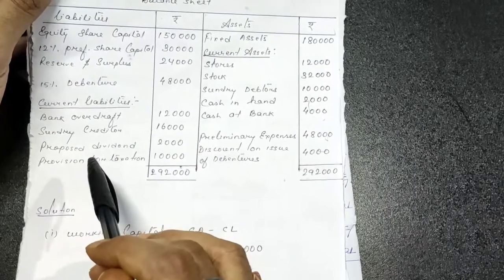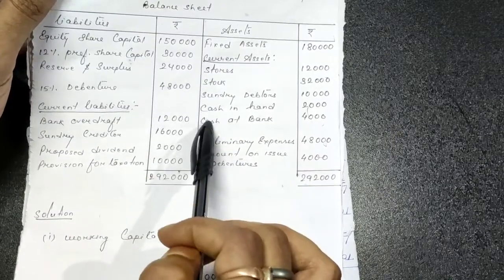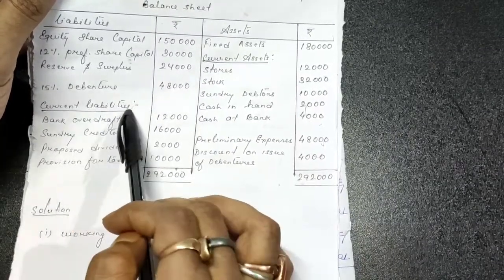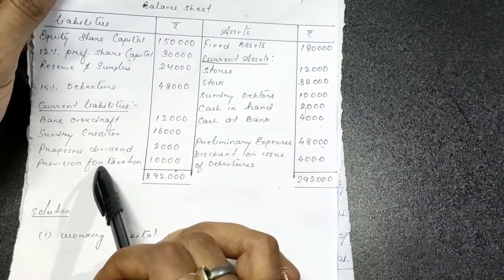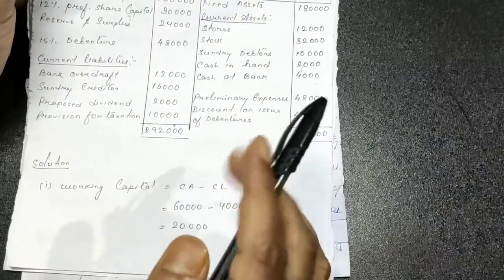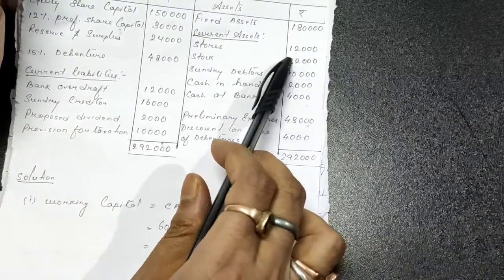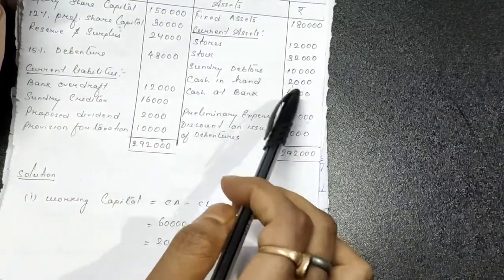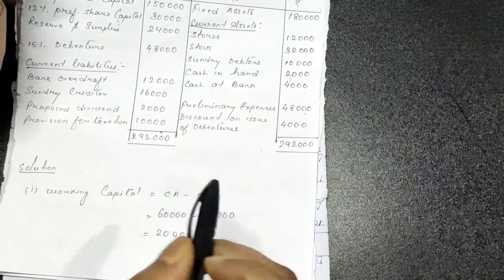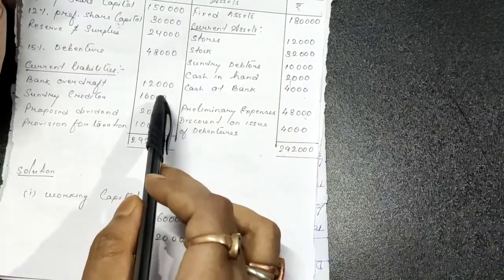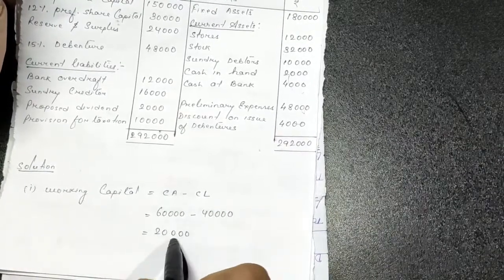The heading is already given — current assets — so those five items are your current assets, and under current liabilities those four items are your current liabilities. If we add up the five current asset amounts, the total coming up is 60,000. Minus current liabilities: if we add up those four amounts you get 40,000. So 60,000 minus 40,000 gives you 20,000.